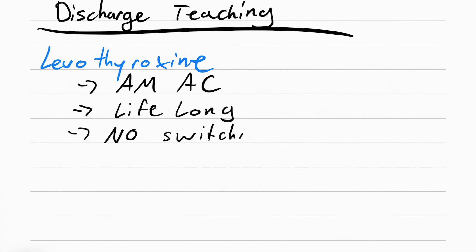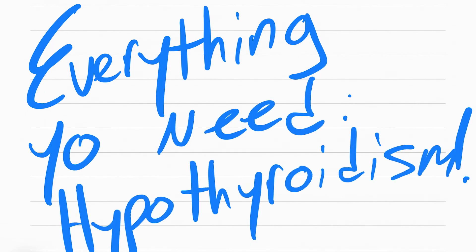You also want to teach them that they'll be on this drug for life. You also tell them that they can't switch brands—so this is the one time you should know the brand name for a drug. It's called Synthroid. The last thing you need to teach them is that they're going to have to have a lot of follow-ups. This is to check T3, T4, and TSH so we know the drug is working. That's everything you need for hypothyroidism.